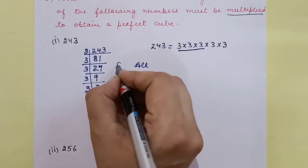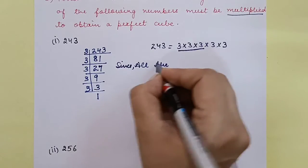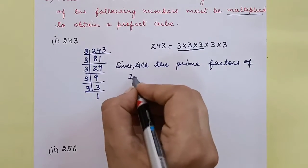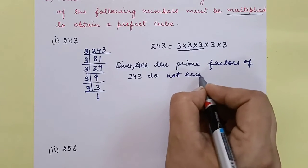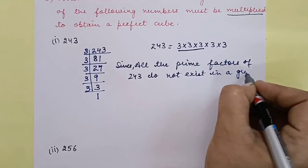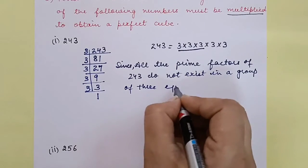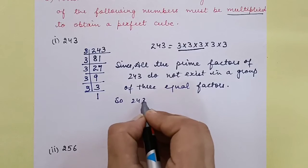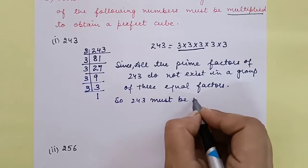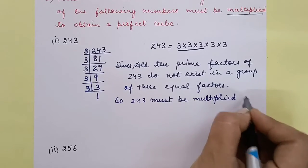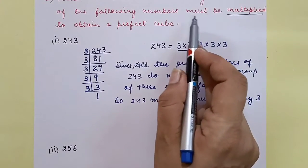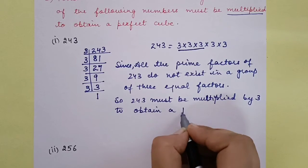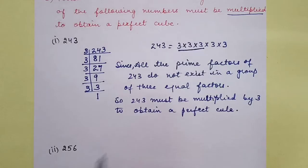Now here, you have to write one line: 'Since all the prime factors of 243 do not exist in a group of 3 equal factors, 243 must be multiplied by 3 to obtain a perfect cube.' You have to write this statement line in all such questions. That's it.